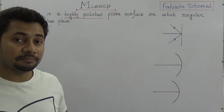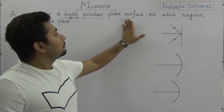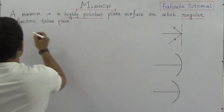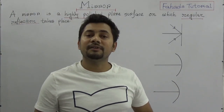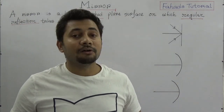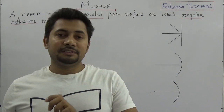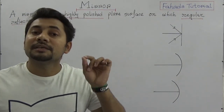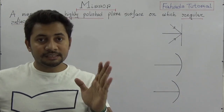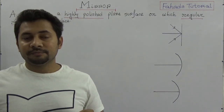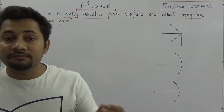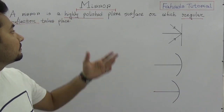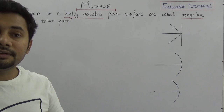The mirror is a highly polished plain surface on which regular reflections take place. As you know from my previous video, reflections are two types: regular or uniform reflection, and diffused or irregular reflections. When we talk about a mirror, we must know that it has a plain surface and regular reflections take place. So in the definition of mirror, we can say that a mirror is a highly polished plain surface on which regular reflections will take place.